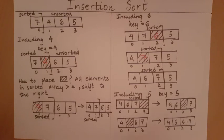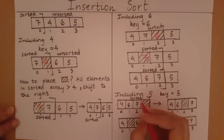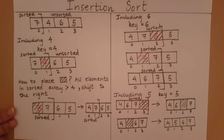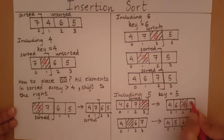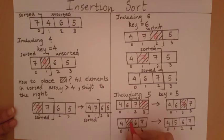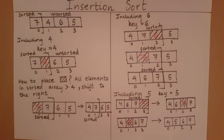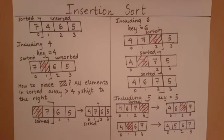The same applies when including five: once we store five in key, that position in the array can be compromised. When seven and six are copied to their next positions, their previous positions are likewise ready to be overwritten. This is how insertion sort works, and that is what we mean by 'creating a space.'